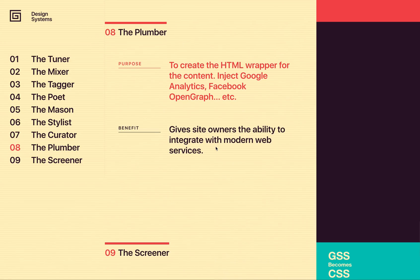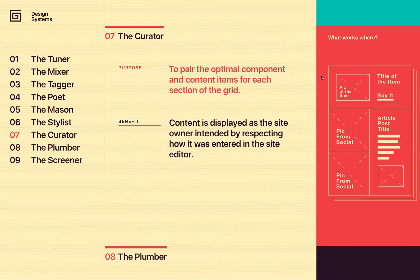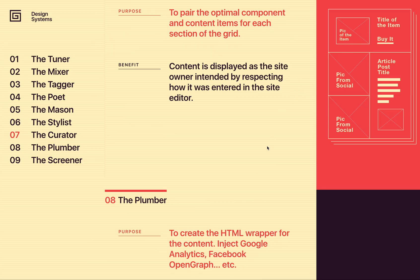After that we go to the plumber. The plumber is really just injecting some non-visual components in the page like Google Analytics, Facebook Open Graph, and other web service integrations. At this point we really have a full web page with an HTML tag, the head tag, and the body tag, with the grid and all of the content and UI components inside the body tag.